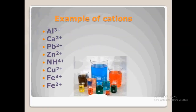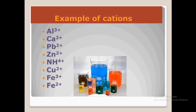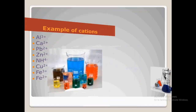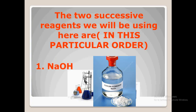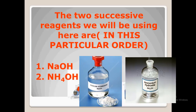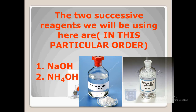Examples of cations we'll be looking at here are aluminum, calcium, lead, zinc, ammonium, copper, iron(III), and iron(II). The two successive reagents we'll be using, in this particular order, are sodium hydroxide and ammonium hydroxide. Please note that in this test process the two reagents must be used in this particular order: number one is sodium hydroxide and number two is ammonium hydroxide.